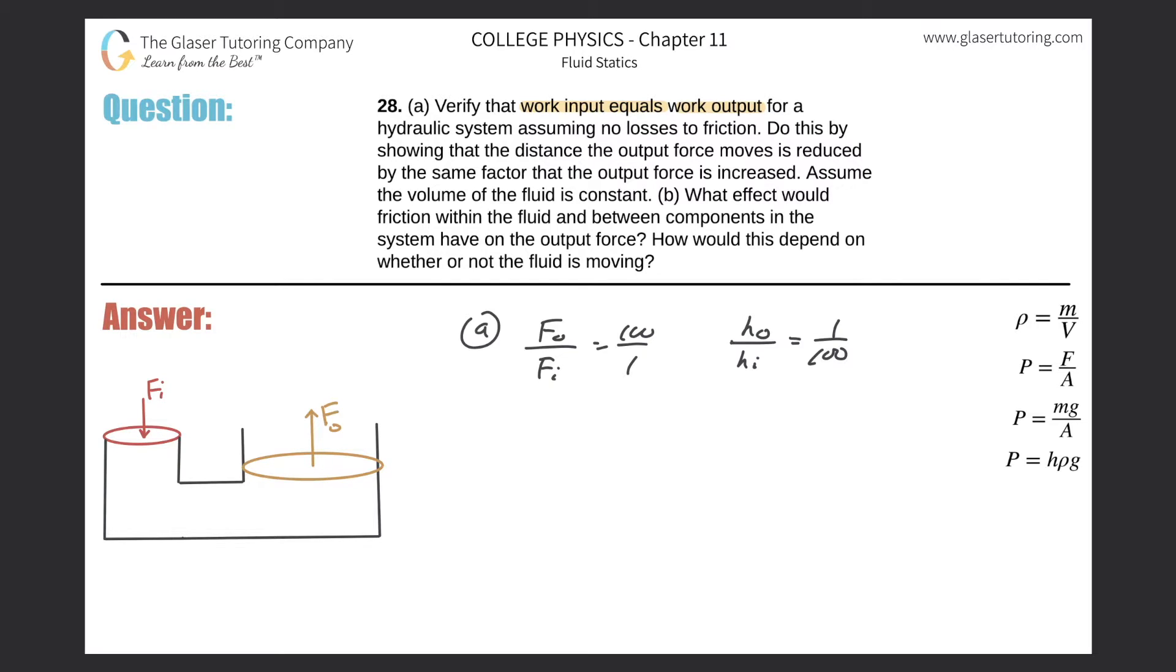If you follow all the logic of the prior problem, look at the relationship: the relationship here is exactly reciprocal to one another. Why is the output force magnified by 100 times the input force? It's because the output distance or height is one hundredth that of the input height.